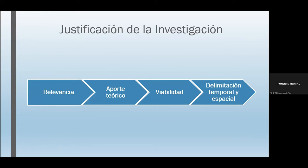En cuanto a la justificación de la investigación, tiene relevancia debido a que trata temas sobre productores que no tienen acceso a insumos por sus escasos recursos o porque no hay un agro comercial cercano. También tiene un aporte teórico demostrado científica y estadísticamente, y una viabilidad apoyada en una vasta biblioteca y un laboratorio central en la Universidad Nacional de Villarrica del Espíritu Santo. La delimitación temporal fue desde abril a julio del año 2023, en la ciudad de Coronel Oviedo.